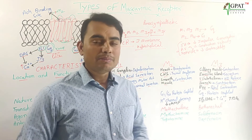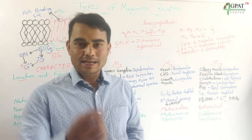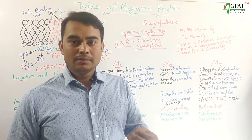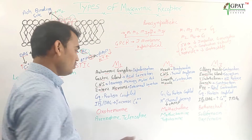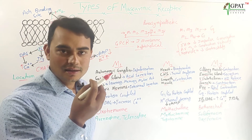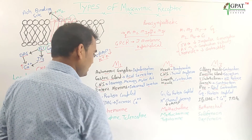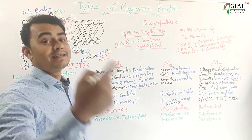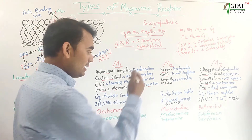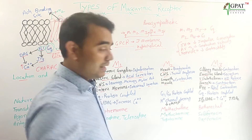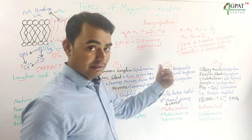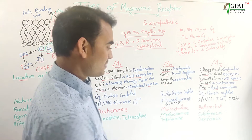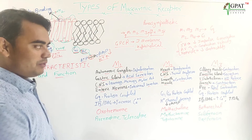To remember these receptor locations, here is a simple mnemonic: 'Pehle khao' — meaning eat first — relates to M1 at the gastric gland increasing acid secretion, because you eat and then digestion happens. 'Phir dil lagao' — then focus on the heart — means M2 on the heart. Then 'baqi kaam baad mein' — the rest comes after — meaning everything else is M3. This is the trick to remember M1, M2, M3 locations.